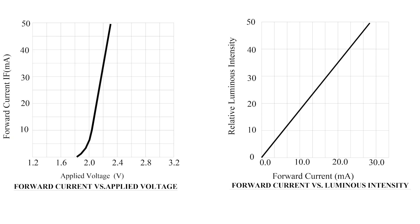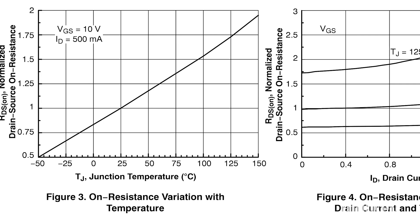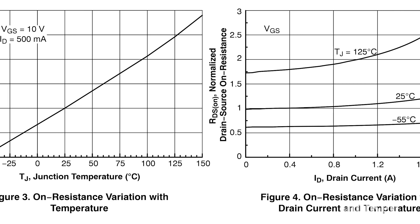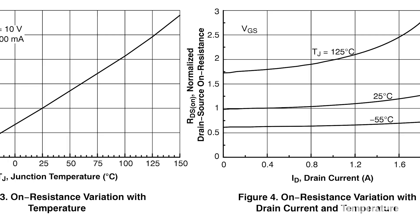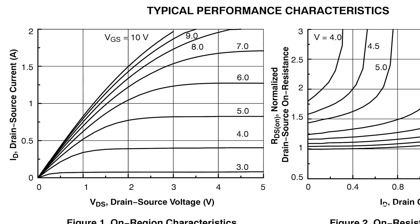Data sheets often include plots and graphs to show how a component behaves under different conditions, like temperature, voltage, or frequency. These can look a little abstract at first, but they're incredibly helpful for understanding performance trends. For example, an LED might have a graph showing how its forward voltage drops slightly as temperature increases, or a transistor's gain may vary with collector current. These visualizations help you predict what your part will do in the real world, and help you design smarter and avoid surprises later.